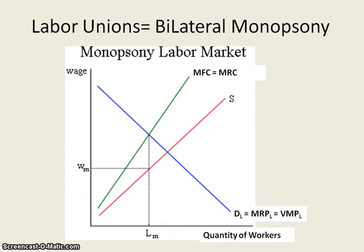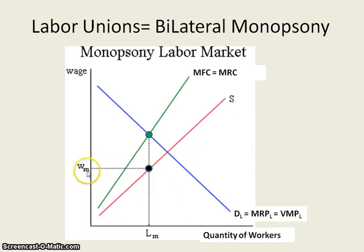What happens is that you've got this monopsony and we know how their wage rate and number of workers are hired. You go over to where MRC equals MRP, take that down, and that gives you the quantity of workers hired. Then you go down to the supply curve and that gives you the wage rate that the monopsony is willing to pay.